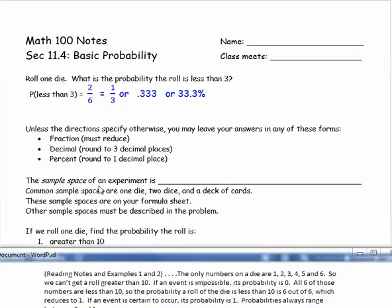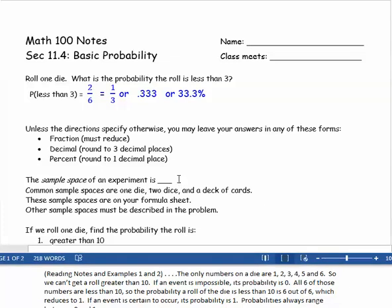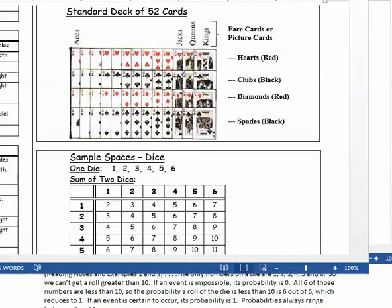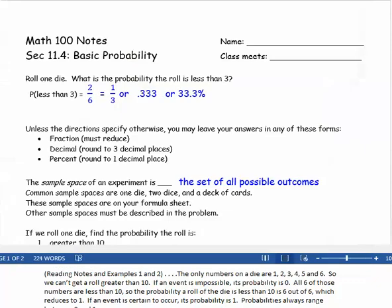The sample space of an experiment is the set of all of its possible outcomes. Common sample spaces are one die, two dice, and a deck of cards. All of these sample spaces are on your formula sheet. But if there is another situation with a different sample space, then that sample space will be described in the problem.